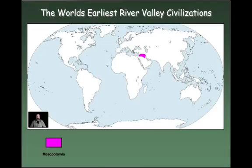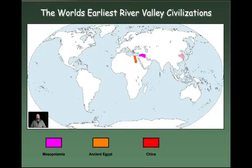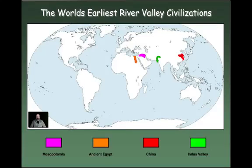Let's start off with the first one: Mesopotamia. That's going to be our oldest civilization that we explore, and it's located in the Tigris and Euphrates river valleys. The next one is Ancient Egypt, which is located in the northern part of Africa and runs along the Nile River. Then there's China — we're looking at the Yellow River Valley in northern China. And the fourth is the Indus Valley, which runs through the center of modern Pakistan along the Indus River. Make sure you record the locations of these in your journal.